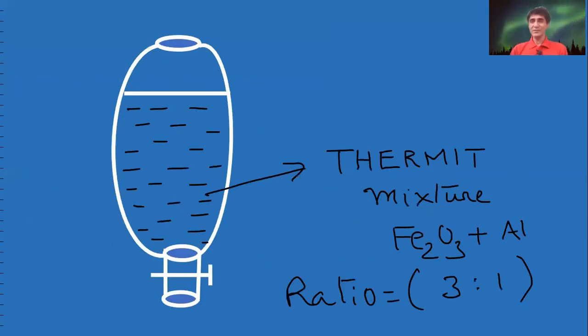Now, this crucible is filled with thermite mixture. What is thermite mixture? Mixture of ferric oxide and aluminum in the ratio of 3 to 1.